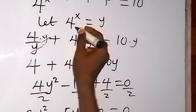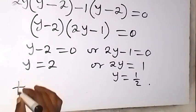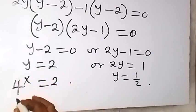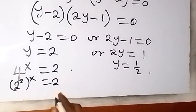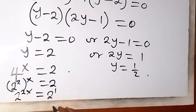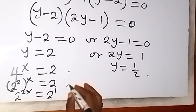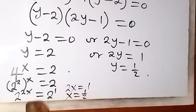Substituting back, since y equals 4 raised to power x, the first case gives 4 raised to power x equals 2. Writing 4 as 2 squared, we get 2 raised to power 2x equals 2 raised to power 1. Since the bases are equal, we equate exponents: 2x equals 1, so x equals 1 over 2.